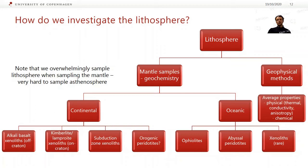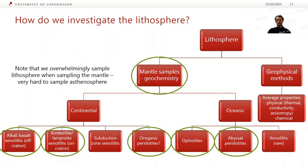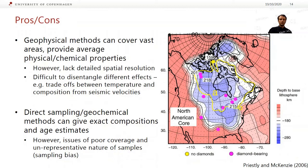In terms of oceanic lithosphere, the main things we can study are ophiolites and abyssal peridotites. There are also oceanic xenoliths, but they only occur where you get some fairly rare lavas, so I'm not going to talk about those much. In green are just the things we're going to be focusing on in this course.